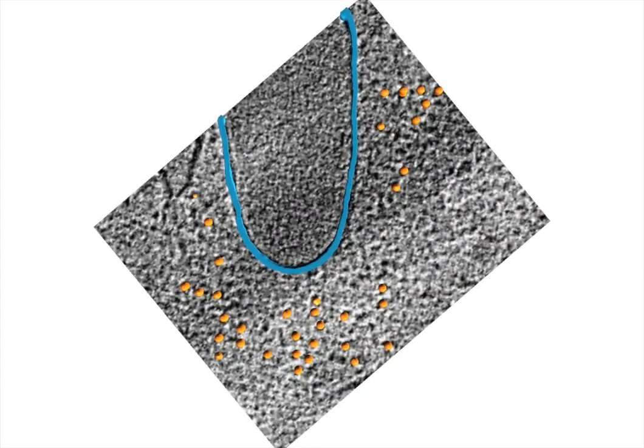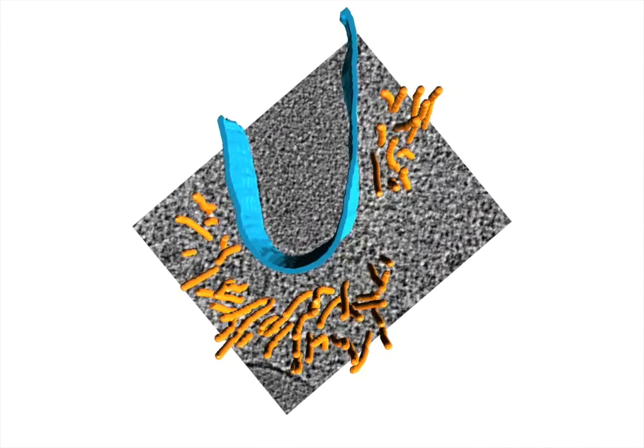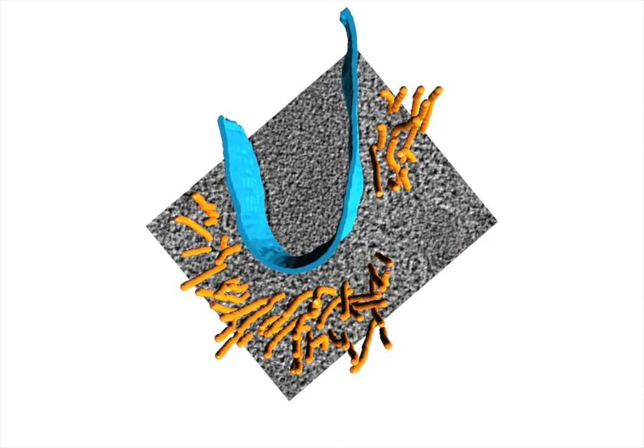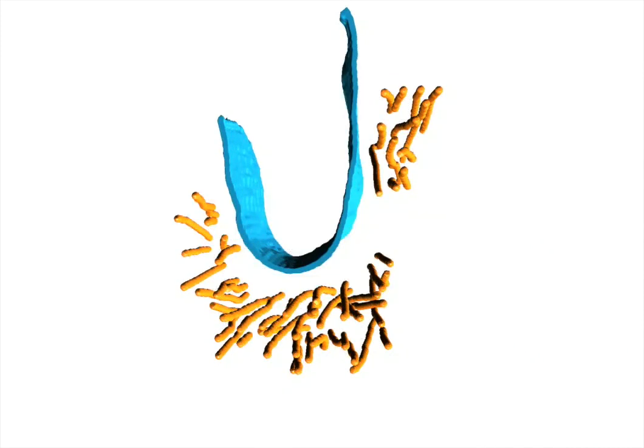Three dimensional segmentations of the septal membrane and the actin filaments were generated for structural analysis. From these segmentations, it is clear that the actin bundle is composed of straight filaments running circumferentially around the mid-cell, nearly parallel to the membrane.